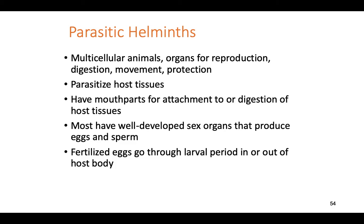Now let's talk about parasitic helminths — multicellular animals, so lots of different cells all required for the organism to function. They have fully functional reproductive organs making sperm and eggs, are capable of digestion and movement, and have lots of surface spikes and things for protection. Every one of them parasitizes host tissues, sucking nutrients from them. They have creepy little mouth parts like barbed wire grappling hooks or fishing hooks to stick inside host cells and hold onto your tissues.